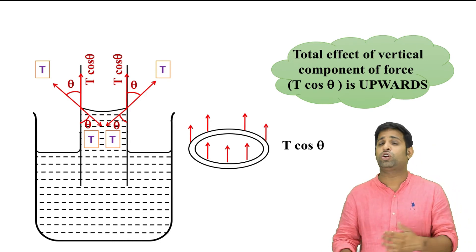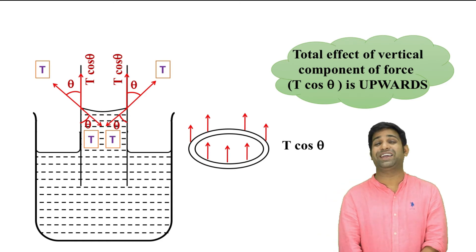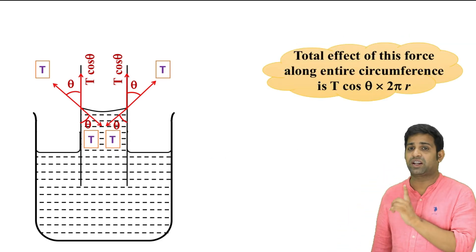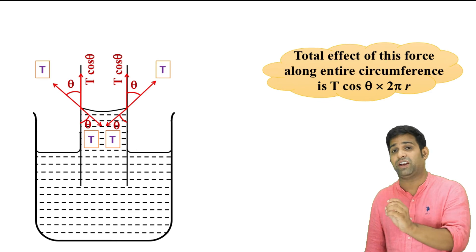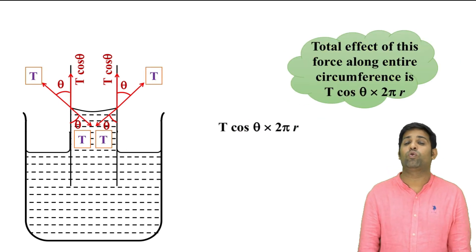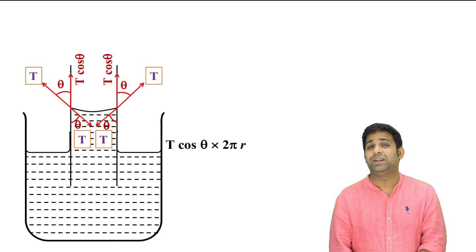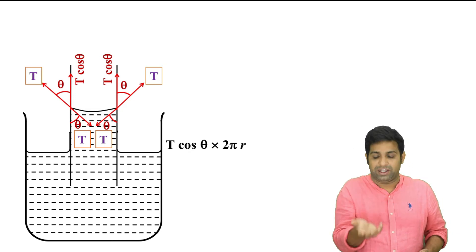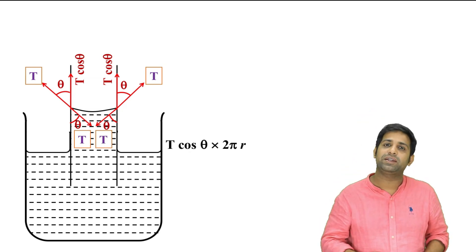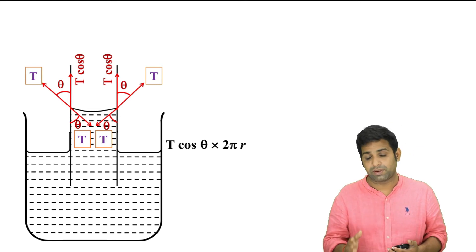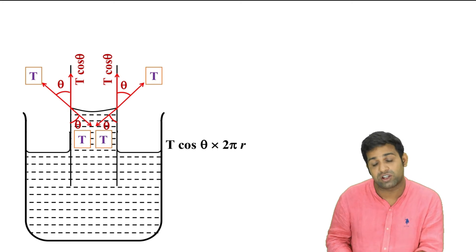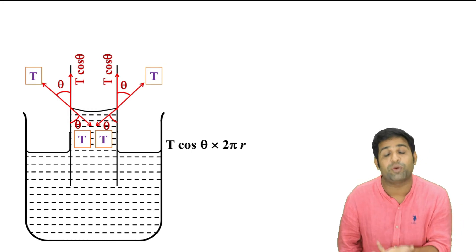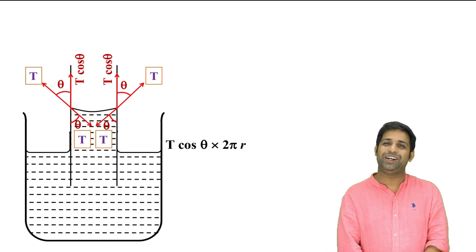The upward component is T cos theta and the horizontal component is T sin theta. All horizontal components cancel out. The upward component T cos theta acts over the whole circumference, giving a total upward force of T cos theta into 2π.